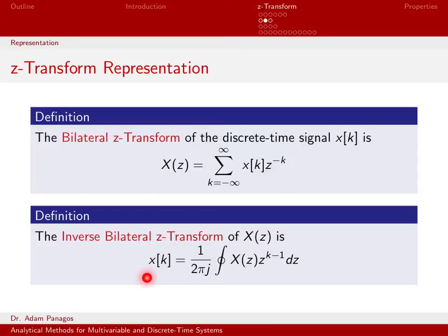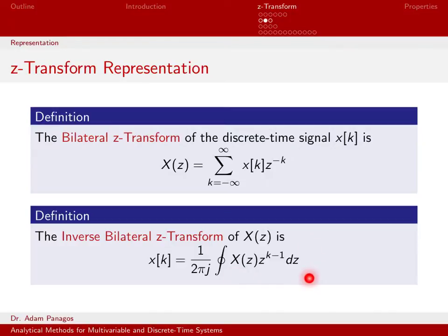Now one thing you'll notice is this integral looks kind of funny — it's not a typical integral symbol. This is an integral with a circle, which is what's called a contour integral. It's a contour integral because we're actually evaluating this complex valued function on a contour in the complex plane. That is something typically handled in upper level undergraduate math or in graduate school in a complex analysis class, where you get into things like residue theory and how to evaluate this type of integral. It's stated here for completeness, but this is not something we're going to plug into and explicitly evaluate in this class.